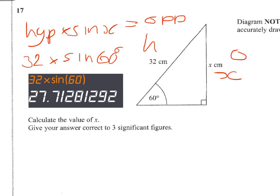Now, I want to round it to three significant figures. So if we look, the first three figures are 27.7. The fourth figure is a one, so that's not going to round me up — it's going to leave me at 27.7 centimetres.